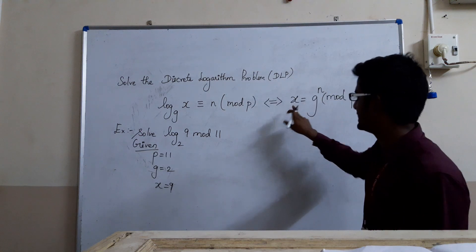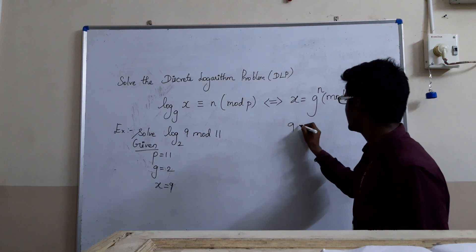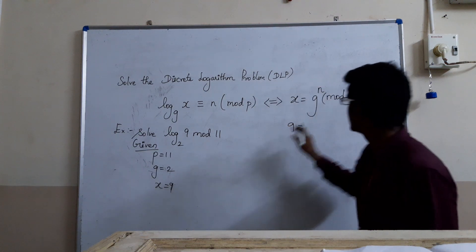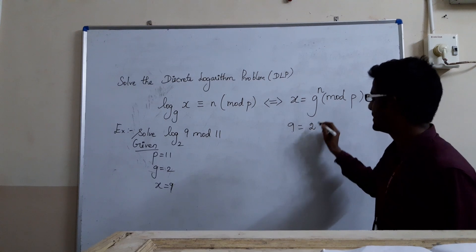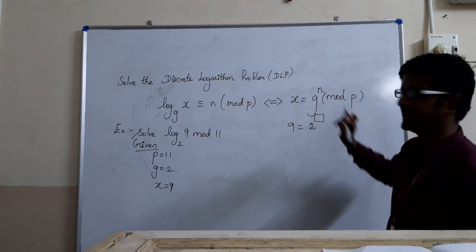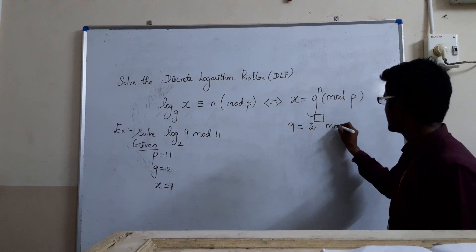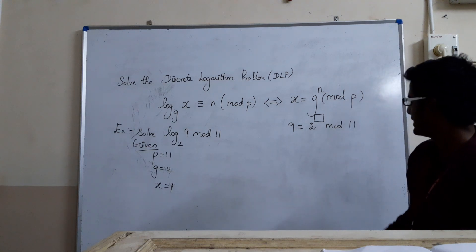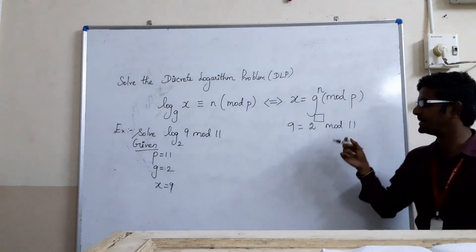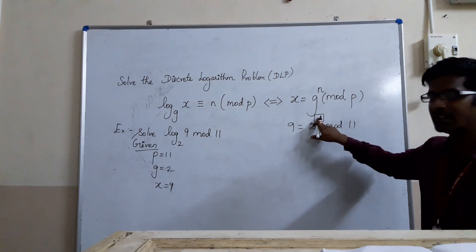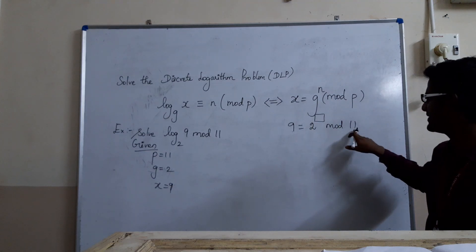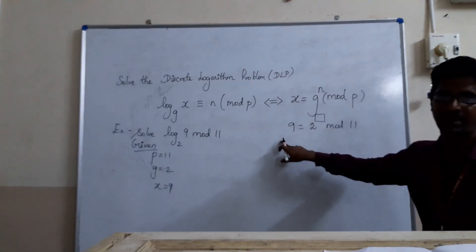Now, we will apply that in this equation. So 9 = 2^n mod 11. We want to find this n. Since 11 is a small number, we can try any number here, so that when divided by 11, we should get this remainder.